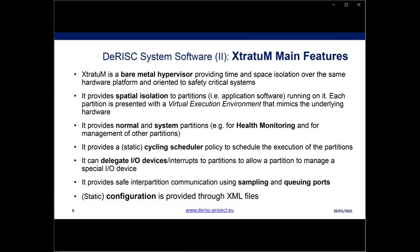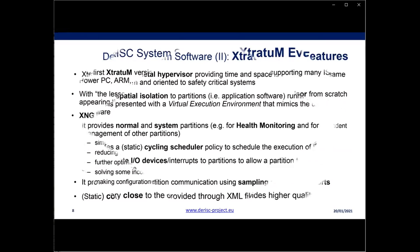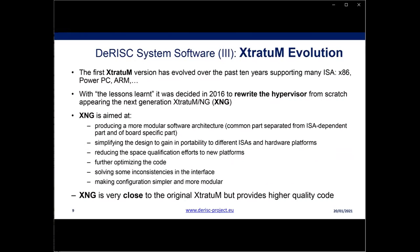It also provides inter-partition communication mechanisms based on sampling and queuing ports defined in ARINC 653. Configuration of the hypervisor is static, provided through XML files. To describe the evolution of Extratum: the first version worked for 10 years supporting many instruction set architectures like x86, Power PC, and ARM. We learned many lessons and decided in 2016 to rewrite the hypervisor from scratch — resulting in what appeared as the next generation of Extratum, or XNG.